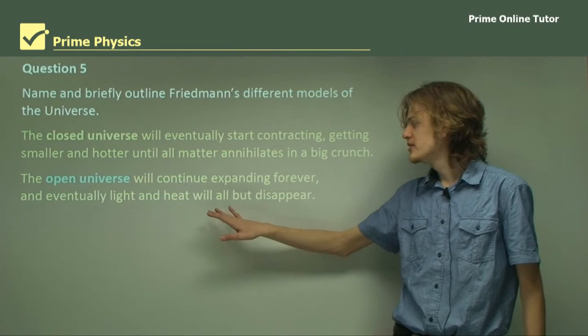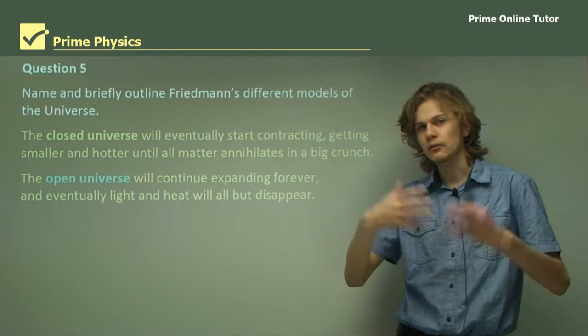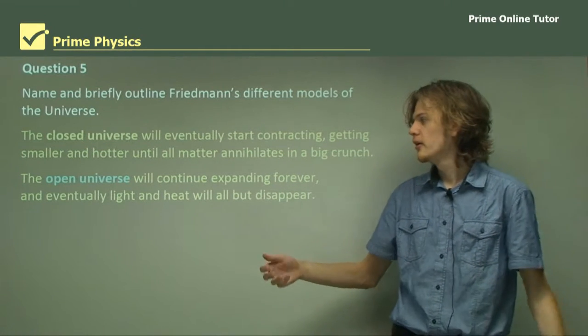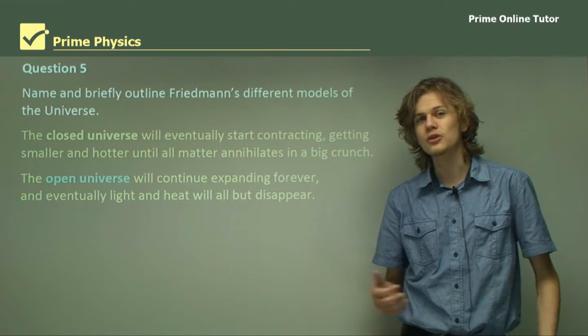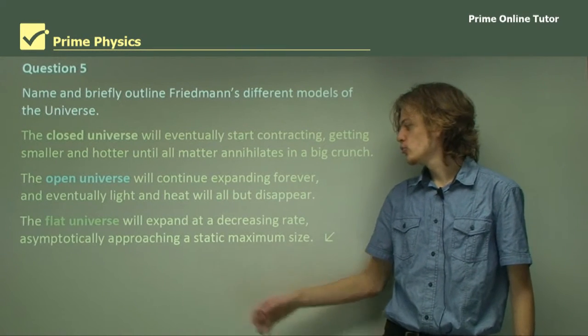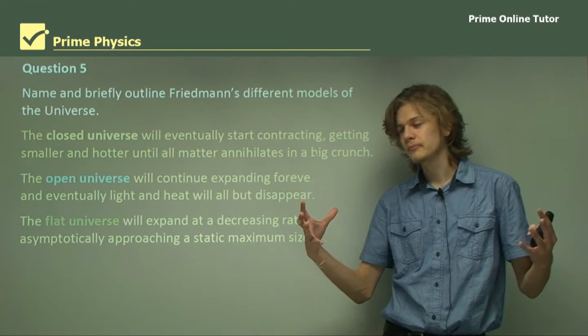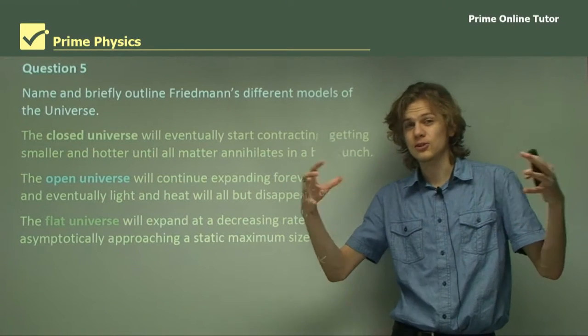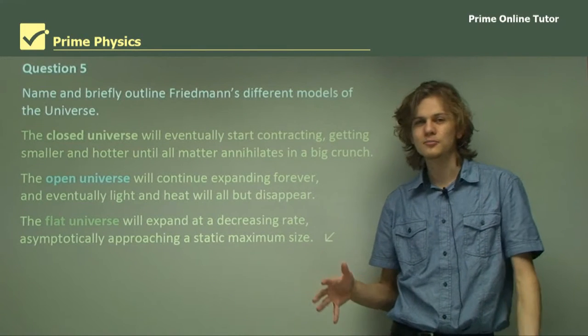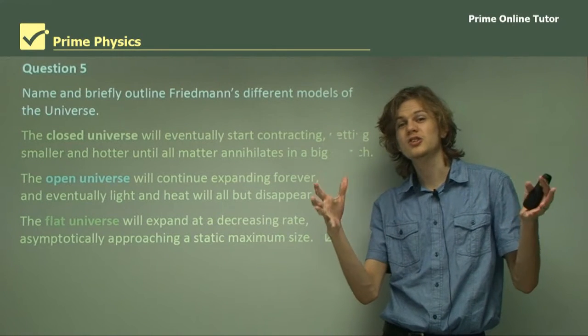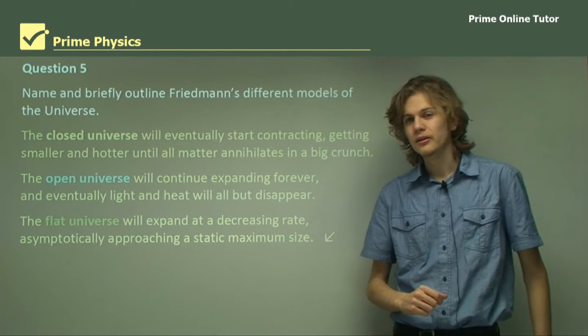The open universe will continue expanding forever, getting colder and darker and bigger, and eventually light and heat will all but disappear. So that's, of course, the heat death of the universe. And finally, a flat universe will expand at a decreasing rate, so getting bigger and bigger, but doing it slower and slower, and asymptotically approach a static maximum size. And so it will sort of slow down and just about stop.